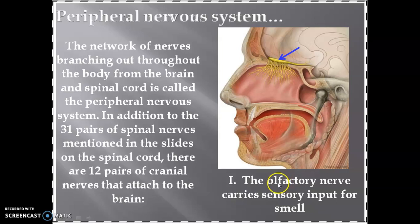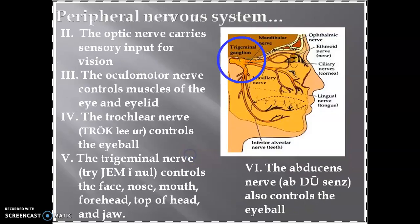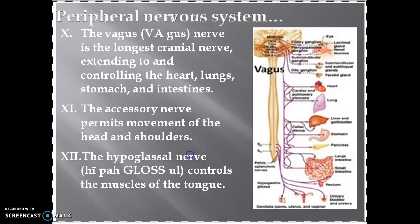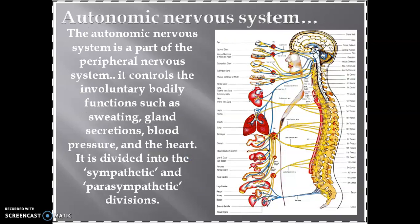In the peripheral nervous system, there are 31 pairs of spinal nerves and 12 pairs of cranial nerves that attach to the brain. They show their action in coordination with the central nervous system. These are the functions of the 12 cranial nerves — a very important topic.